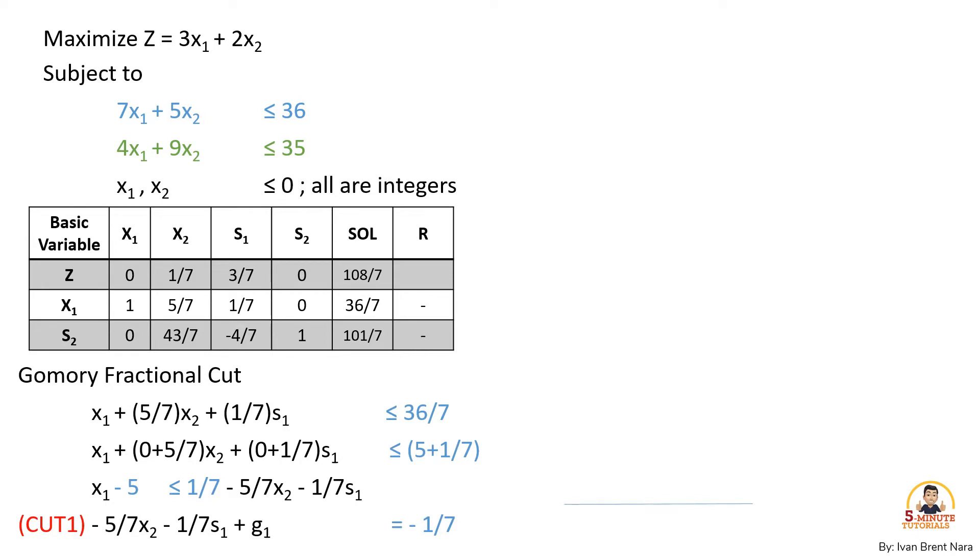It's x sub 1 plus 5 over 7 x sub 2 plus 1 over 7 x sub 1 less than or equal to 36 over 7.